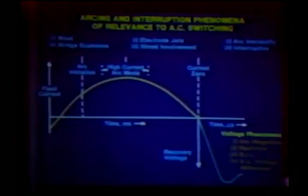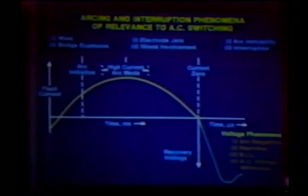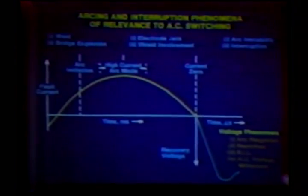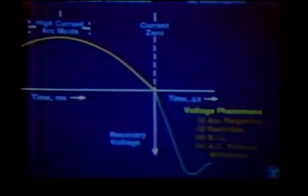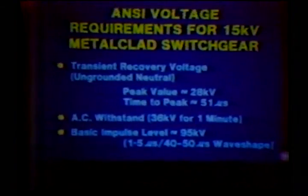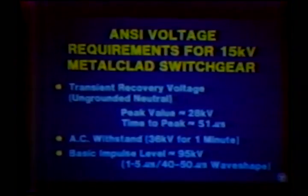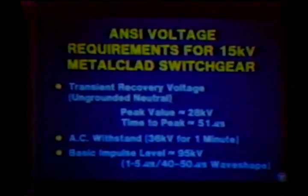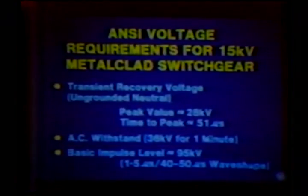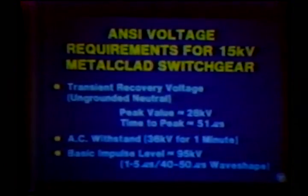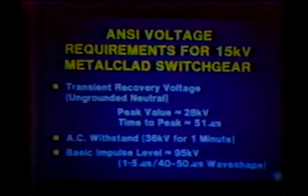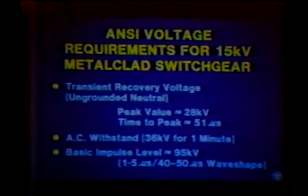The important voltage phenomena we must be concerned about are arc re-ignition and re-strikes — arc re-ignition being during the rise of the recovery voltage wave, and re-strikes being some milliseconds after current zero — as well as the basic impulse level and AC voltage withstand. For 15 kV switchgear, the transient recovery voltage requirement is that you must withstand 28 kV within 50 microseconds of current zero. The AC withstand is of a corresponding magnitude, and the basic impulse level — what value of voltage must that short gap withstand — is of the order of 100 kV for that particular application.